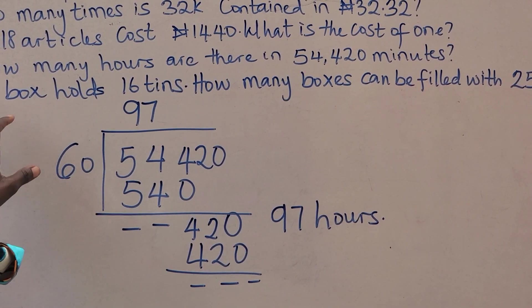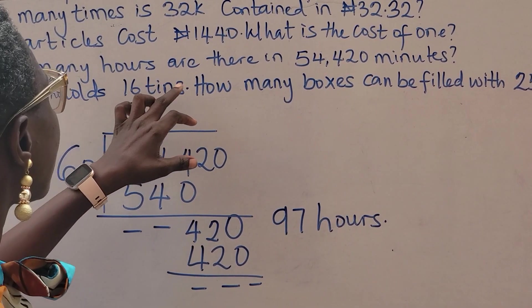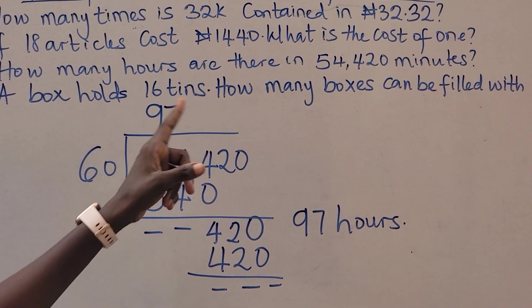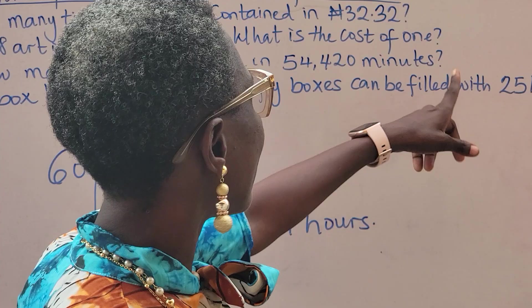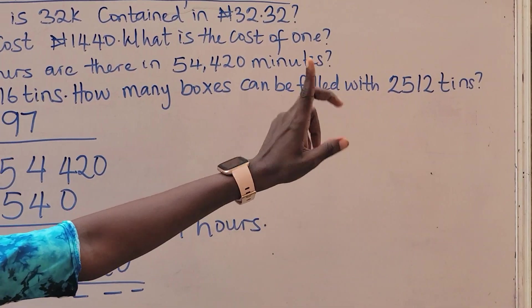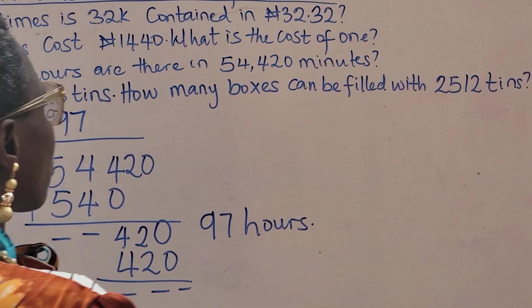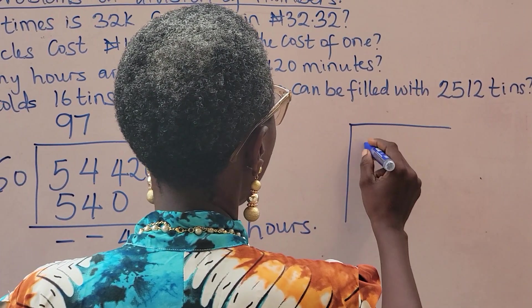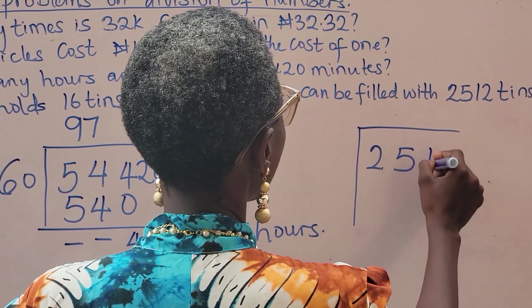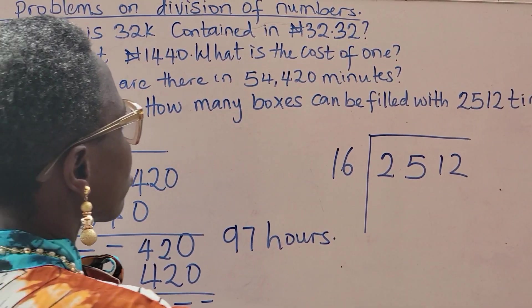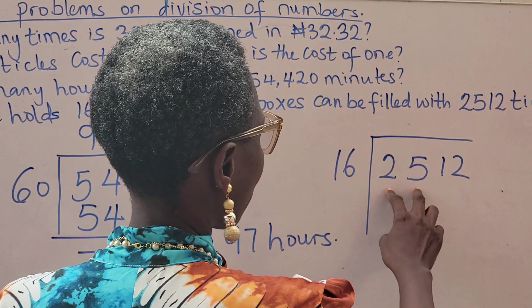The last question I have on the board. A box holds 16 tins. One singular box can hold 16 tins. How many boxes do I need to fill 2,512 tins? So what do I do? I go that same way: 2,512 and I have my 16.